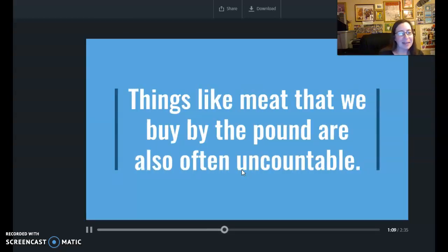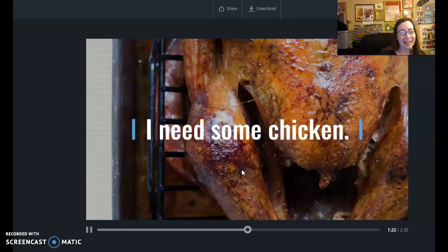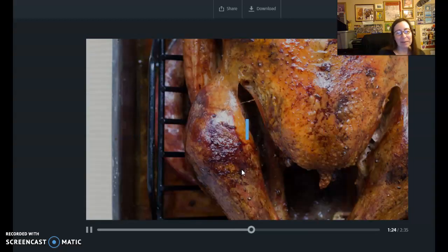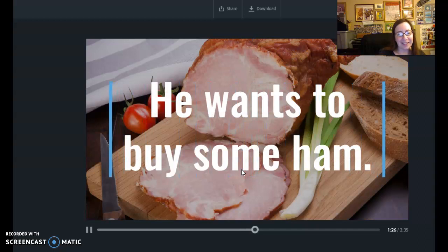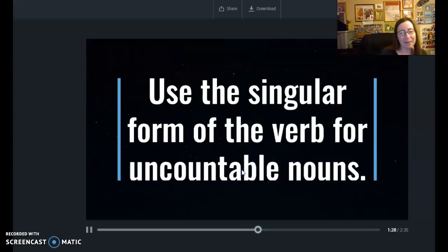Things like meat that we buy by the pound are also often uncountable. Now you can say I want two chickens. That means two whole chickens or two live chickens. But if you want a piece, you say I need some chicken. He wants to cook. He wants to buy some ham.